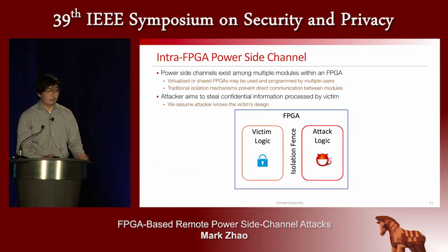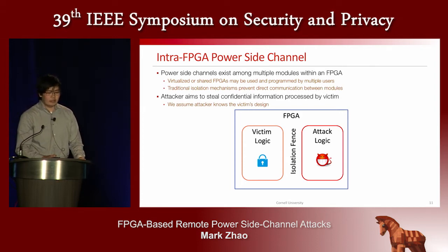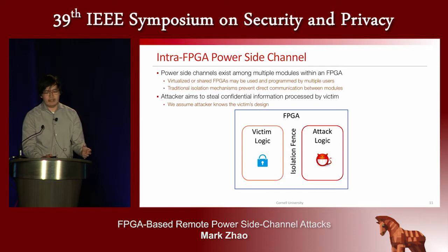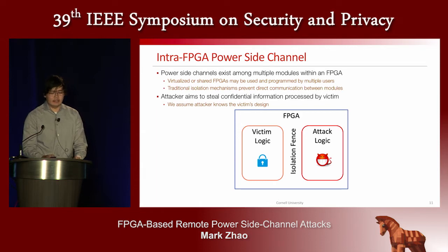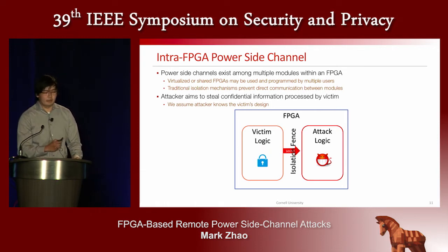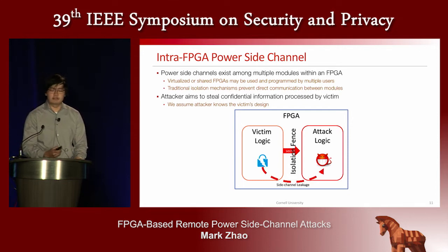Now that we can implement remote power monitors, let's see how these can be used for attacks. In proposed FPGA virtualization scenarios, a victim may be co-tenant alongside an attacker on one physical FPGA device. Traditional isolation mechanisms prevent the attacker from directly reading secret information processed by the victim. However, through this side channel, confidential information may leak to the attacker, breaking the isolation.